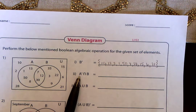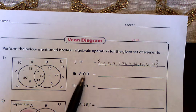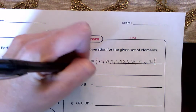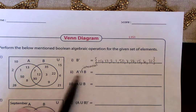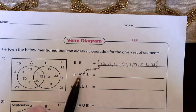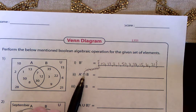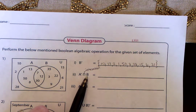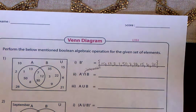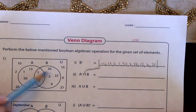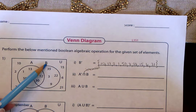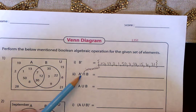Now we can look at this one. This is an intersection because that little symbol is pointing down — so this is an intersection. You're trying to figure out where they intersect. Where do these two sets intersect? It's not-A intersecting with B. So everything that's not A, that intersects with B. It's a little bit tricky, but it's basically saying: in B, but not A.